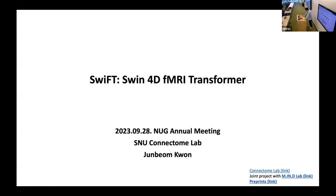Functional MRI, also referred to as fMRI, is used to observe human brain dynamics across a range of human behaviors. SWIFT allows us to observe relationships and patterns in brain activity from high-dimensional fMRI data. The research has been accepted at NeurIPS 2023, and you can find preprints in the link below.